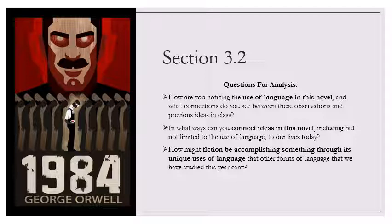The word ended in a gasp of pain. The needle of the dial had shot up to 55. The sweat had sprung out all over Winston's body. The air tore into his lungs and issued again in deep groans, which even by clenching his teeth he could not stop. O'Brien watched him, the four fingers still extended. He drew back the lever. This time the pain was only slightly eased. How many fingers, Winston? Four. The needle went up to 60. How many fingers, Winston? Four. Four. What else can I say? Four. Four. The needle must have risen again, but he did not look at it. The heavy stern face and the four fingers filled his vision. The fingers stood up before his eyes like pillars, enormous, blurry, and seeming to vibrate, but unmistakably. Four.